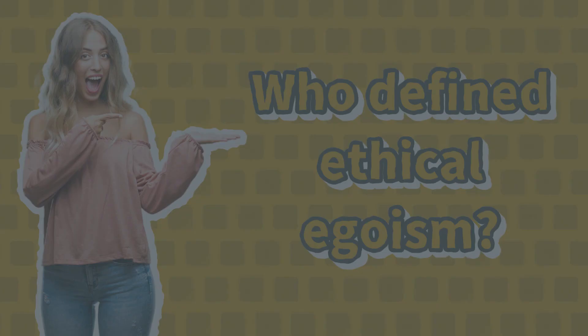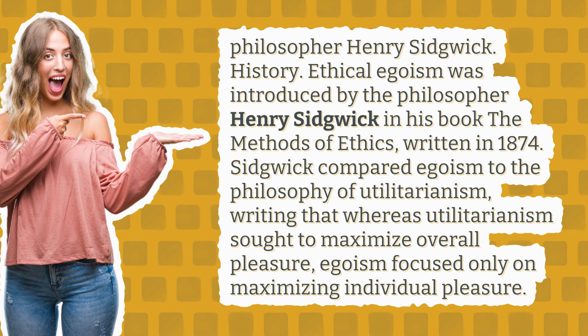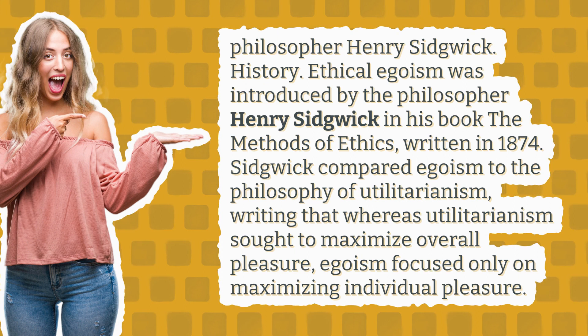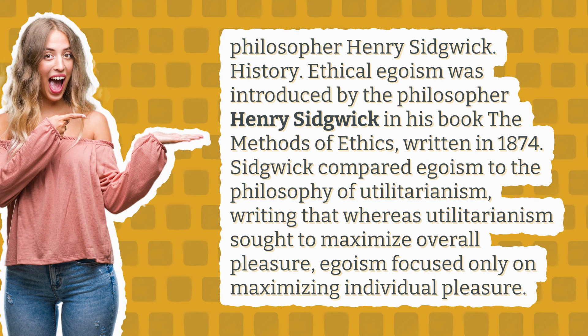Who defined ethical egoism? Philosopher Henry Sidgwick. Ethical egoism was introduced by the philosopher Henry Sidgwick in his book The Methods of Ethics, written in 1874. Sidgwick compared egoism to the philosophy of utilitarianism, writing that whereas utilitarianism sought to maximize overall pleasure, egoism focused only on maximizing individual pleasure.